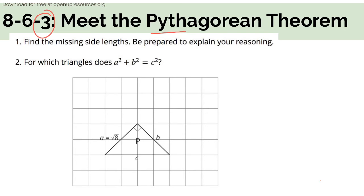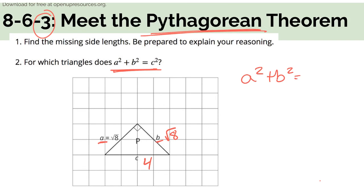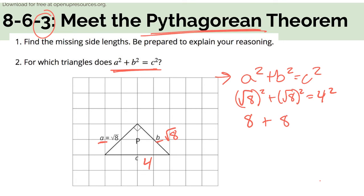In activity 3, this is where we will start using the Pythagorean theorem — there's how you spell it. We're going to use these three triangles and figure out for which triangles the Pythagorean theorem holds true — in other words, for which triangles does A squared plus B squared equal C squared. For triangle P, side A is the square root of 8, side B is also the square root of 8, and side C is 4 units long. Every time you do a problem with the Pythagorean theorem, write it down first, then fill in what you know. The square root of 8 squared is 8, plus the square root of 8 squared, which is 8 — does 8 plus 8 equal 16? Yes, it does. So for this triangle, the Pythagorean theorem holds true.